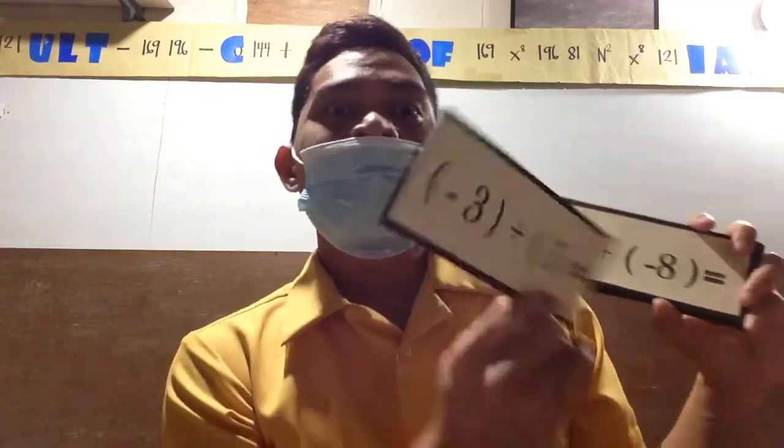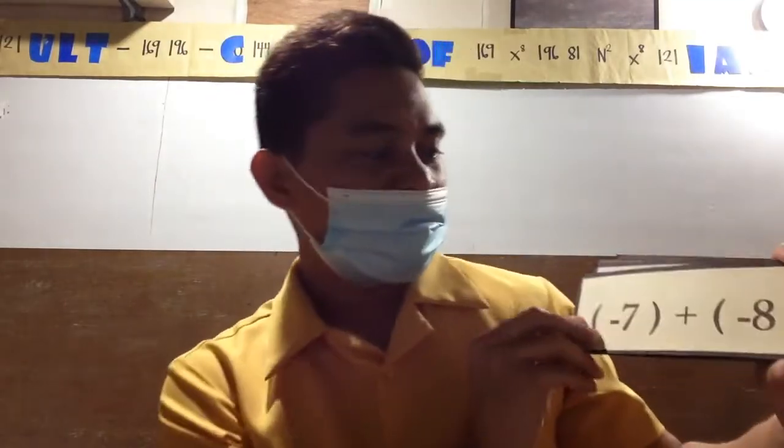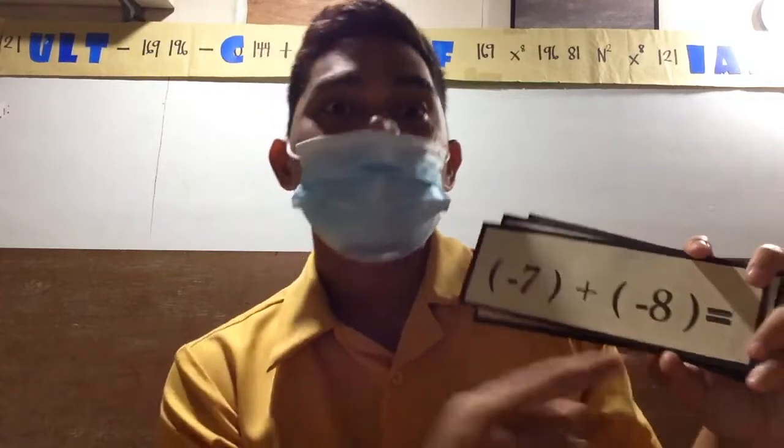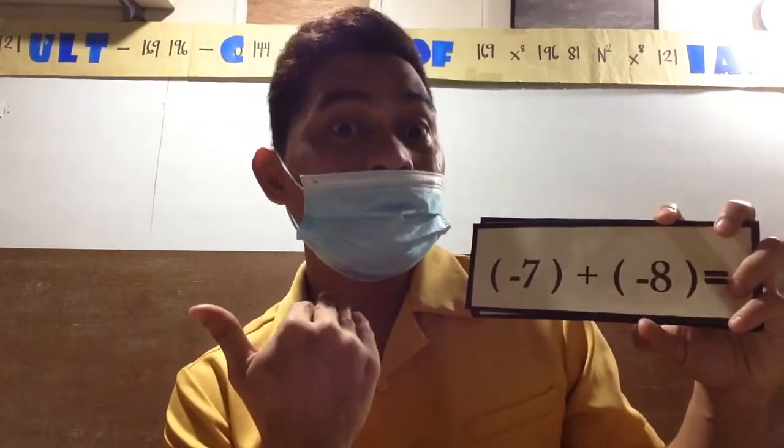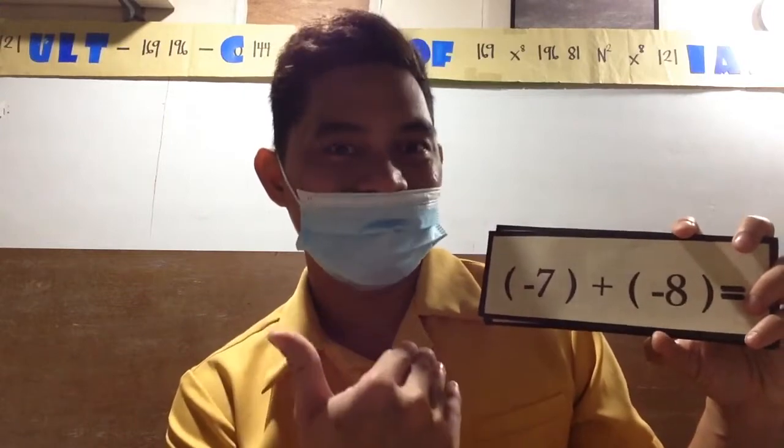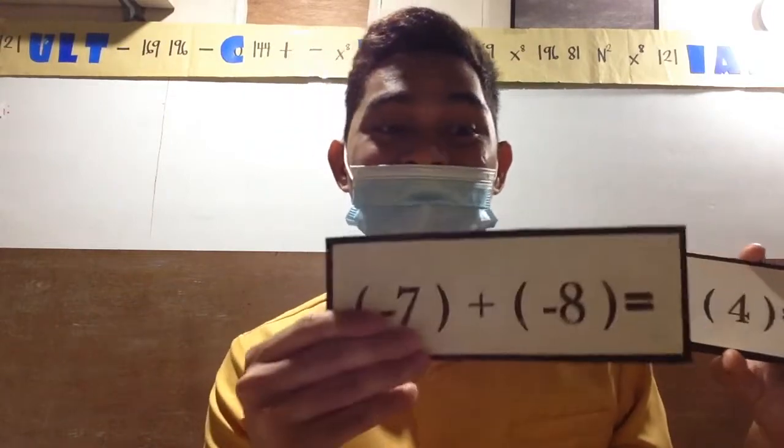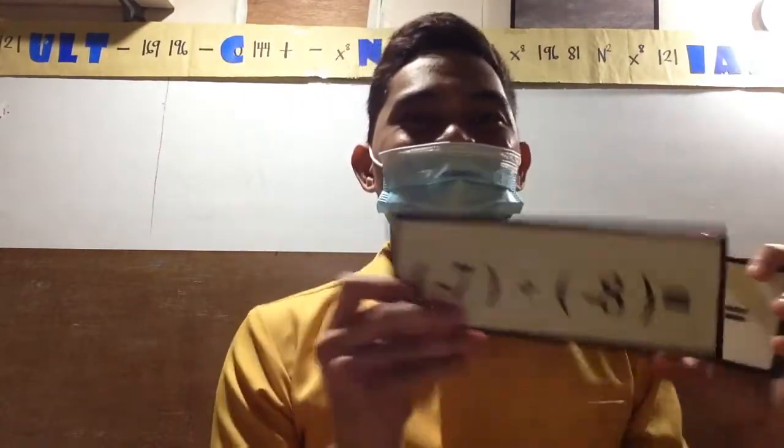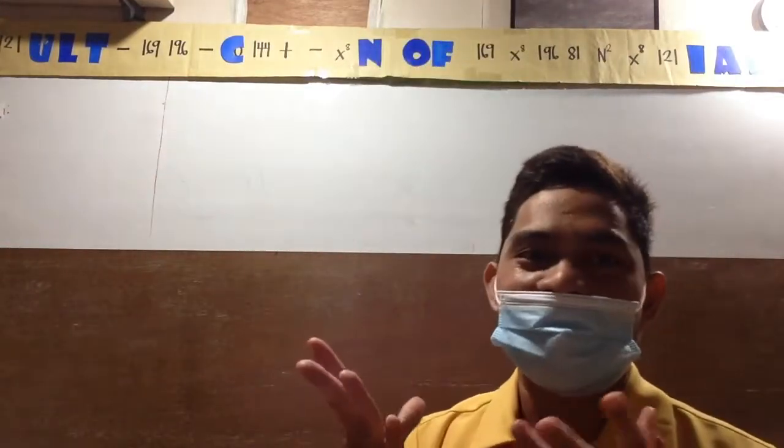Next, negative 7 plus negative 8. When they are like signs, you need to copy the sign then add. So the correct answer is negative 15. Everyone who is standing, let's give them a round of applause because they are correct. Since you're good at integers, let's proceed to our new lesson.